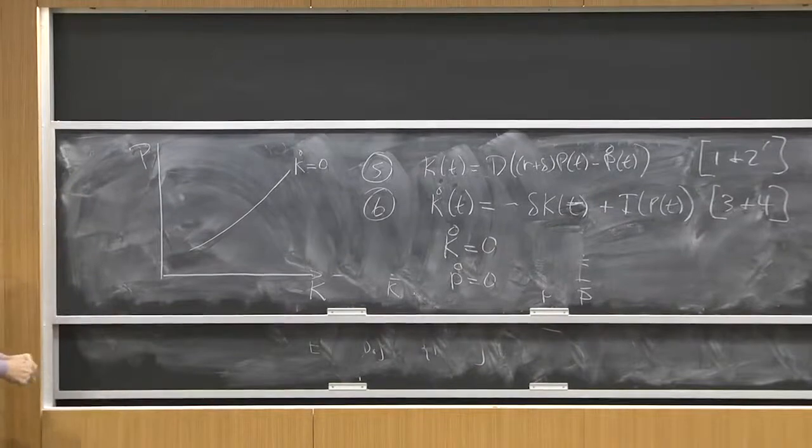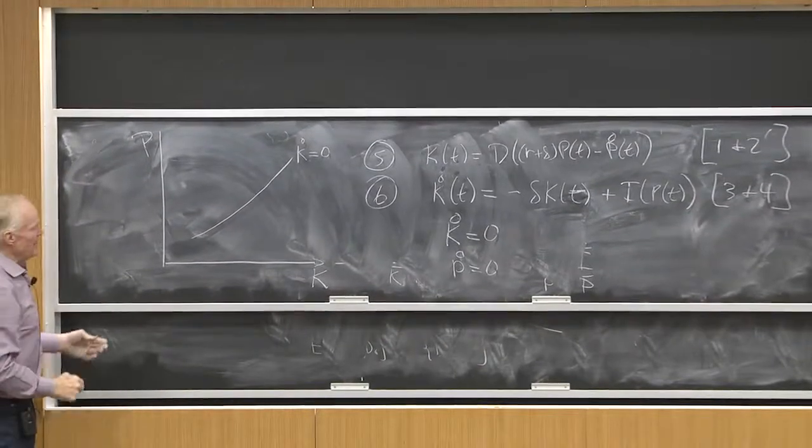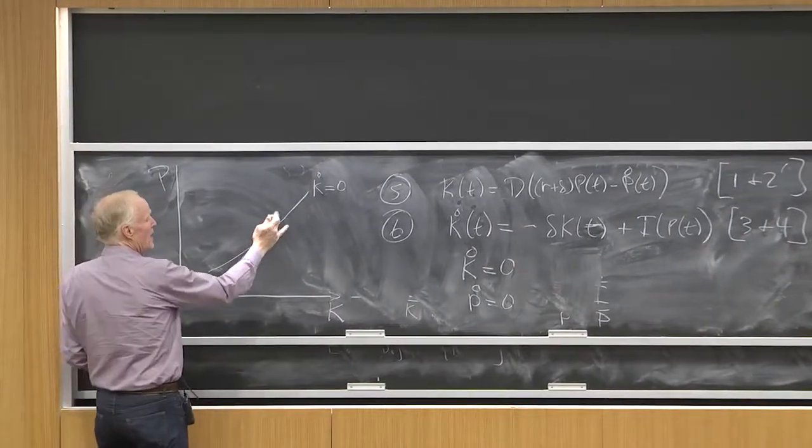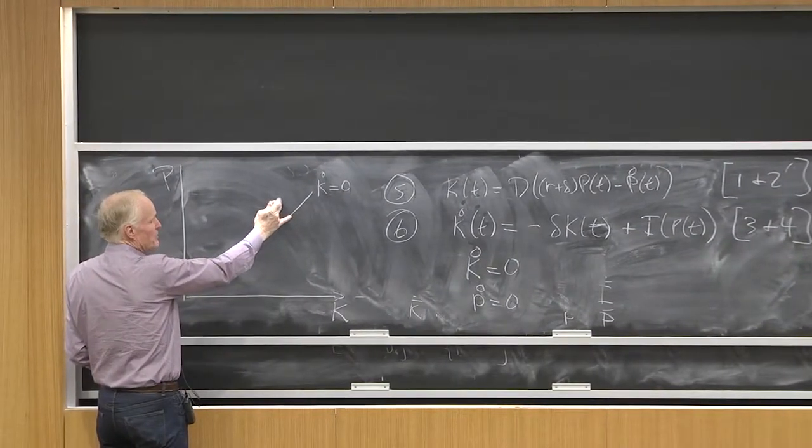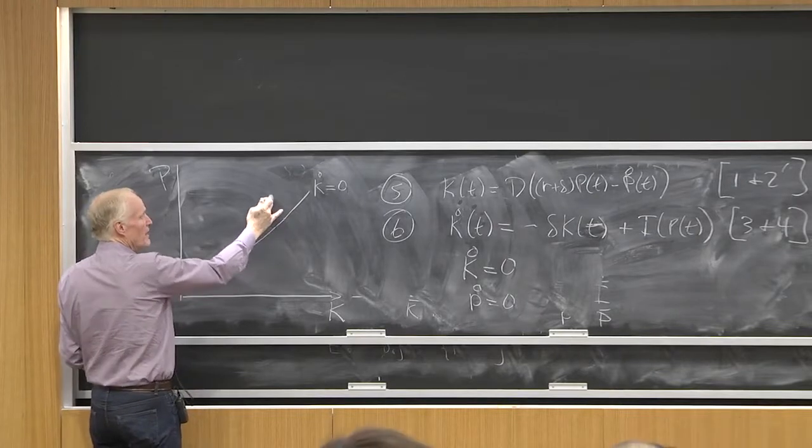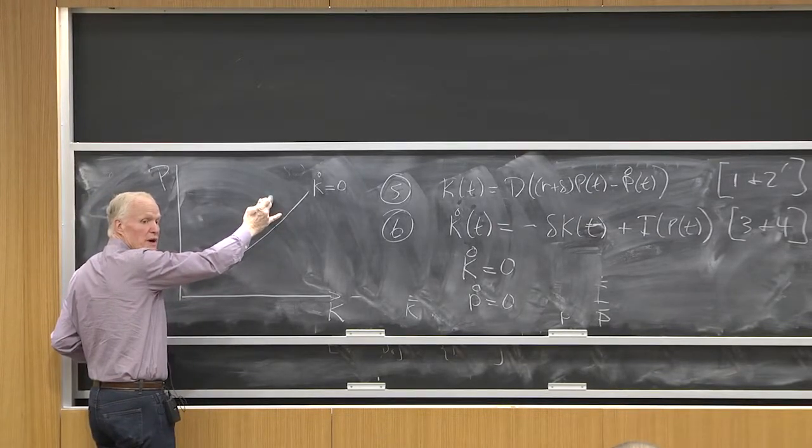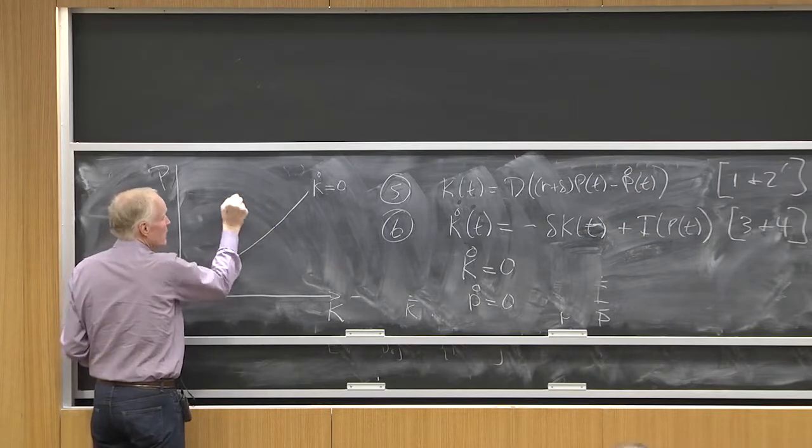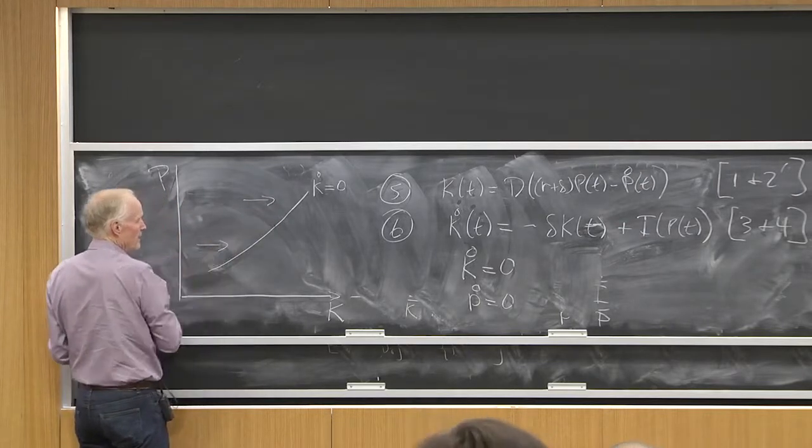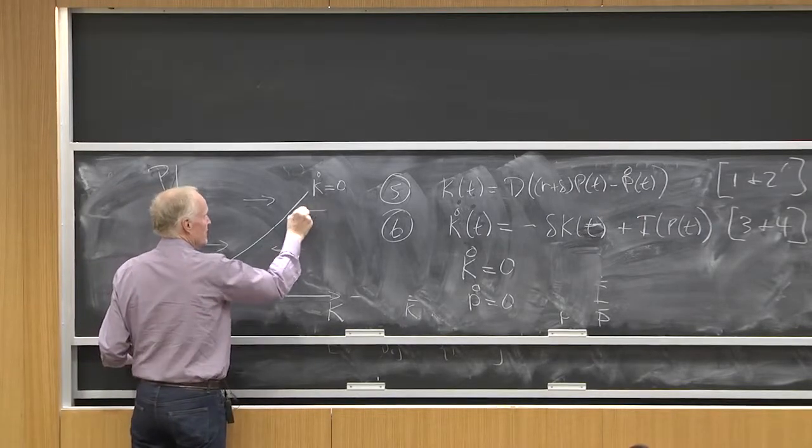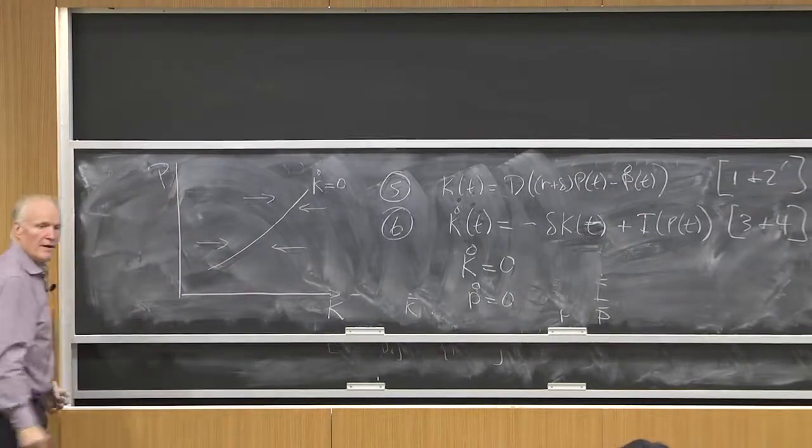Now, how does k move on each side of that curve? Well, if I go up, that's going to increase i. So above this curve, i is higher. So k must be going which way? k is going to the right here. And down here, k is going to the left. Everybody agrees?